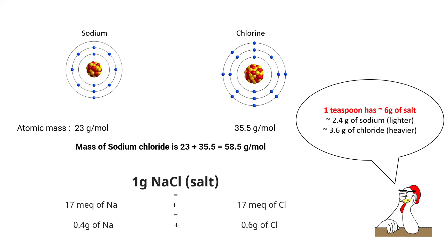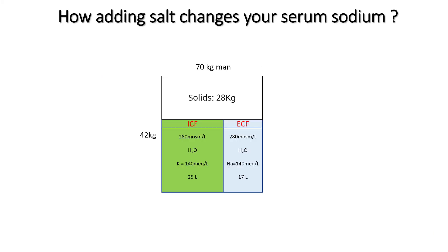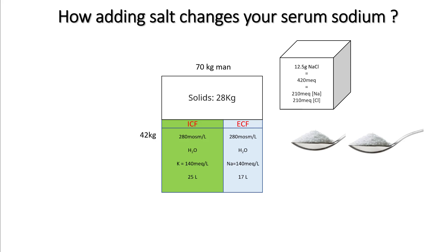One teaspoon has around 6 grams of salt, so that means it has 2.5 grams of sodium and 3.6 grams of chloride. Now let's see how salt changes your serum sodium. We have a 70 kg patient with a total body water of 42 liters, an ICF volume of 25, an ECF volume of 17, and a sodium of 140.